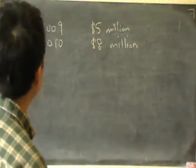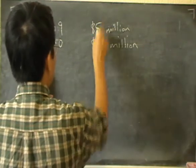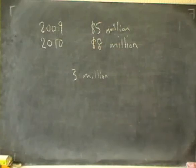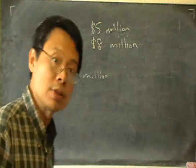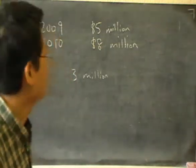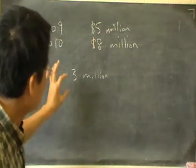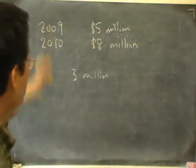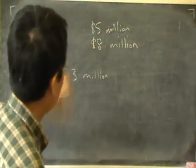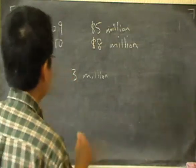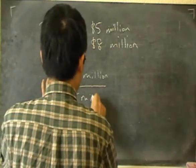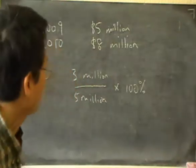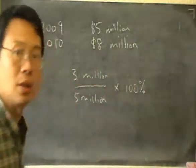The way to do it is first to calculate the increase from 5 to 8, so the increase is 8 minus 5, which is 3 million. Then we express this as a fraction of the starting amount — the initial profit. We want to find this 3 million as a fraction of the 5 million. We take the fraction and multiply by 100 percent — that's always how we calculate percentage.